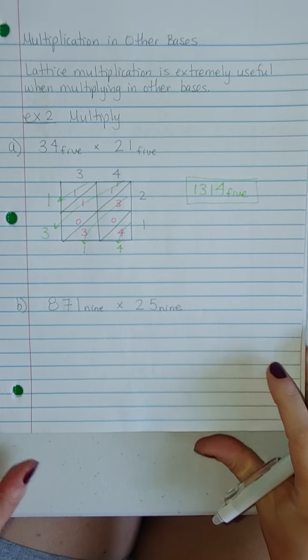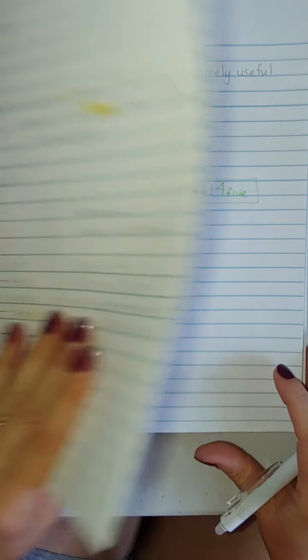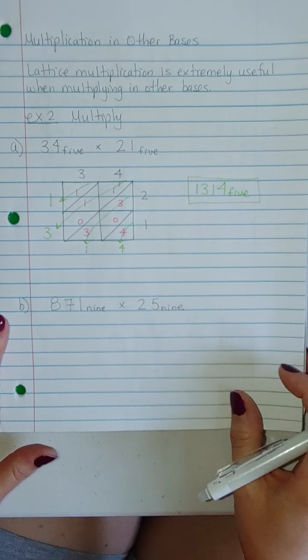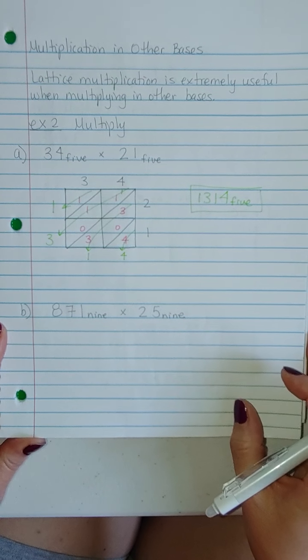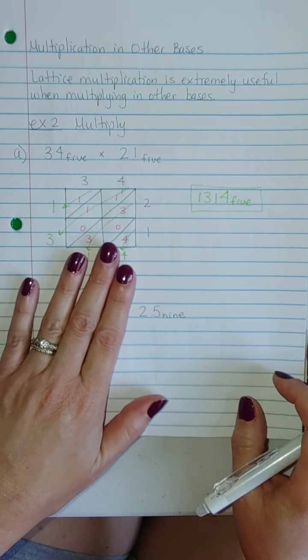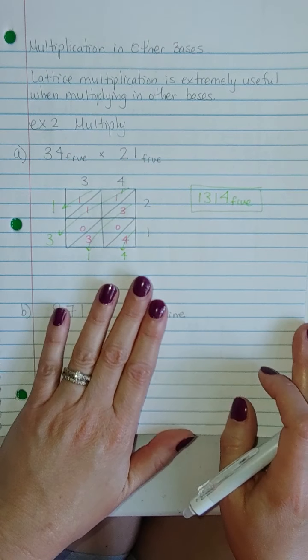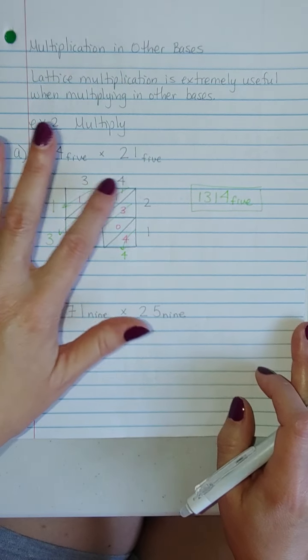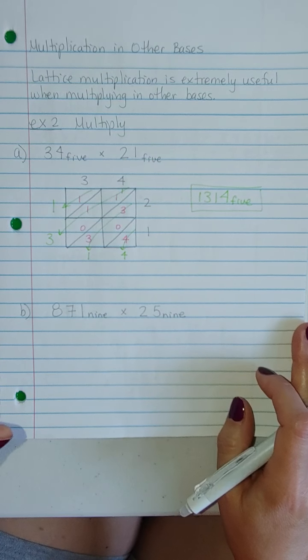So this is the second part of section 3-4. Let's go back here and find it. Section 3-4, multiplication of whole numbers. So this is going to be the second part of that. Multiplication in other bases. So we just covered lattice multiplication. That's going to be really helpful for us in other bases because it's going to keep us from having to do all the regrouping. It's going to keep everything nice and small for us.